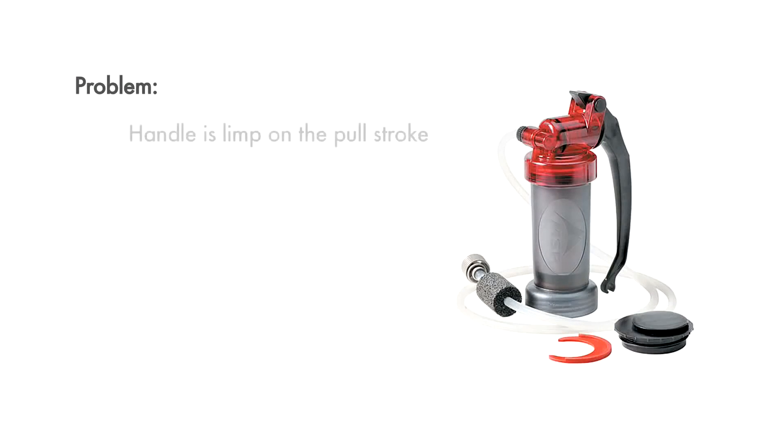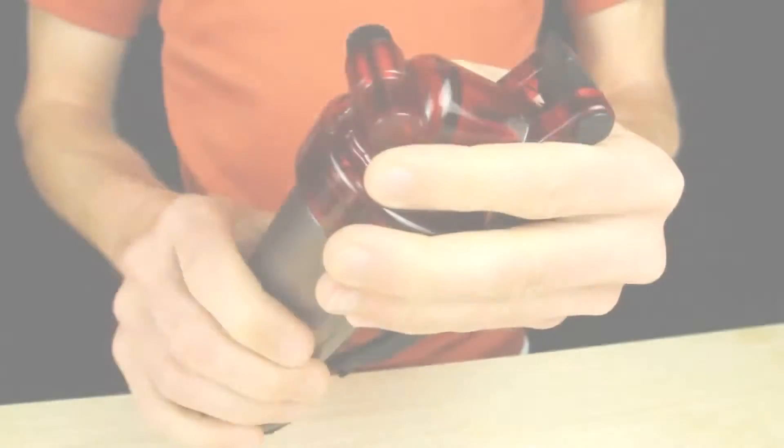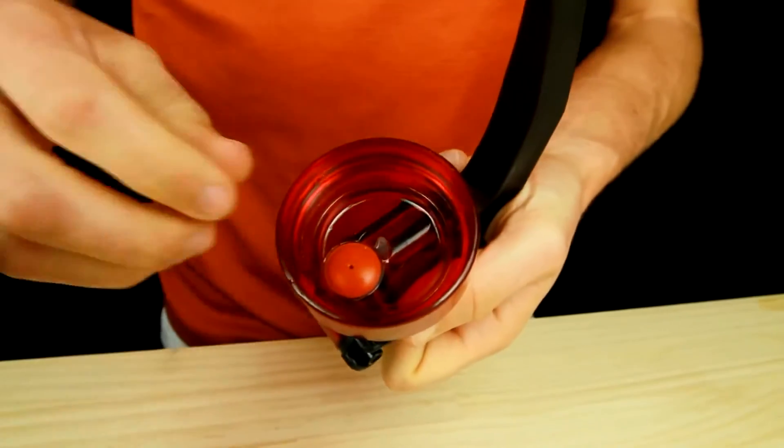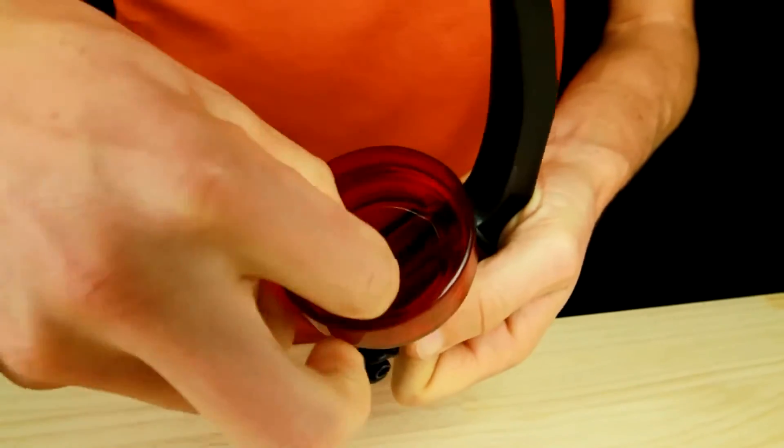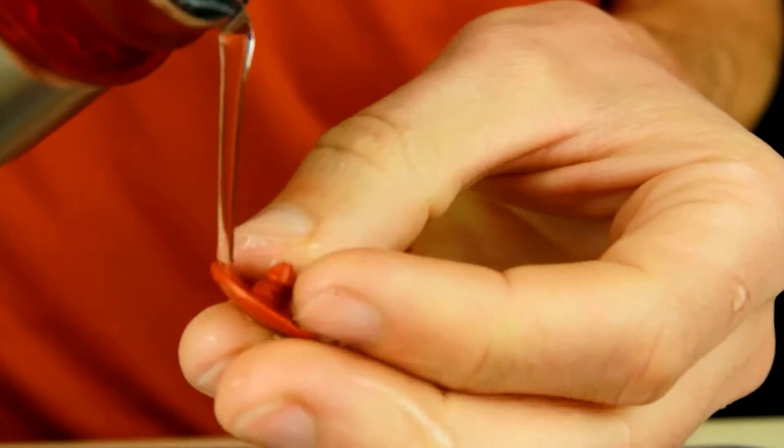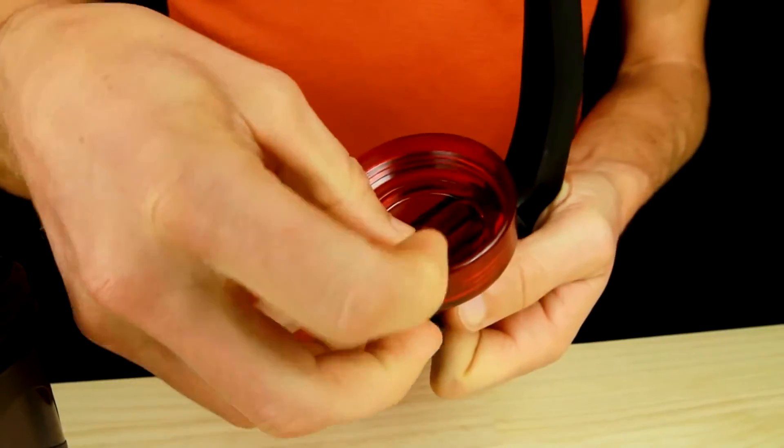If the pump handle feels limp on the pull stroke, the most likely cause is dirt caught in the umbrella valve. To clean the umbrella valve, locate it under the pump head. Pinch and gently pull to remove the valve. Thoroughly rinse the umbrella valve and pump head with clean water and then reinstall it firmly into place.